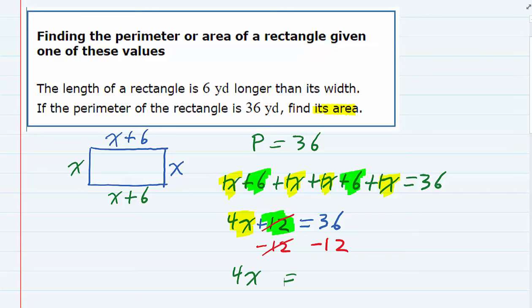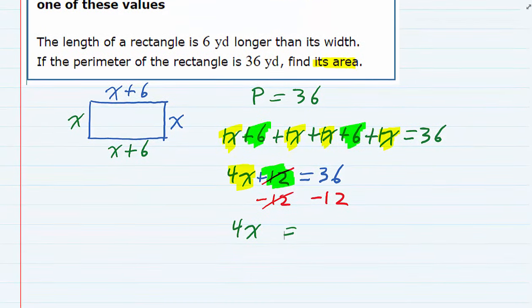And then on the right-hand side, the 36 minus the 12 gives me a 24. So we've almost solved it for x. We just need to get rid of that 4. So I undo multiplication by dividing by 4. But if we divide by 4 on the left, I have to also divide by 4 on the right.